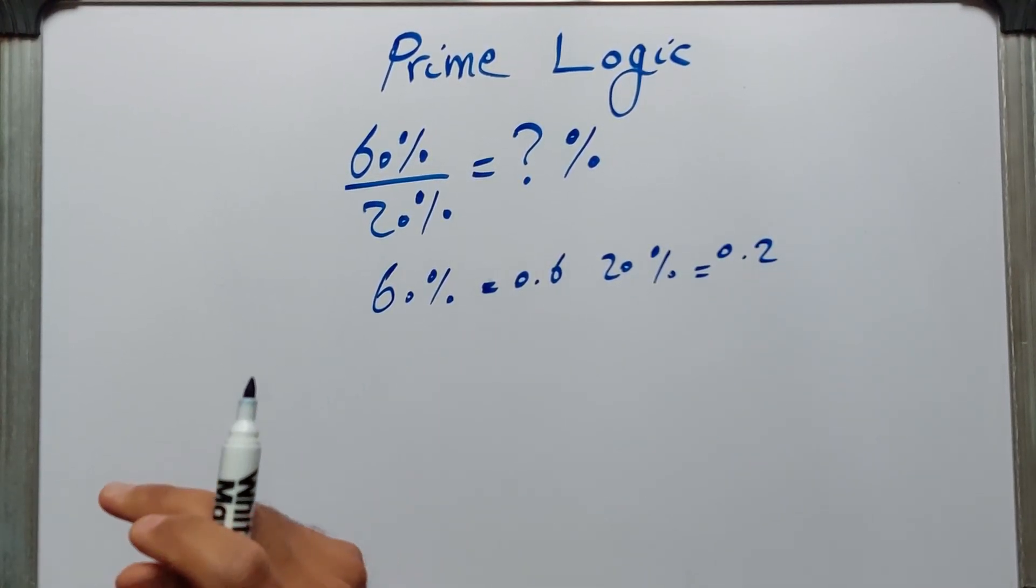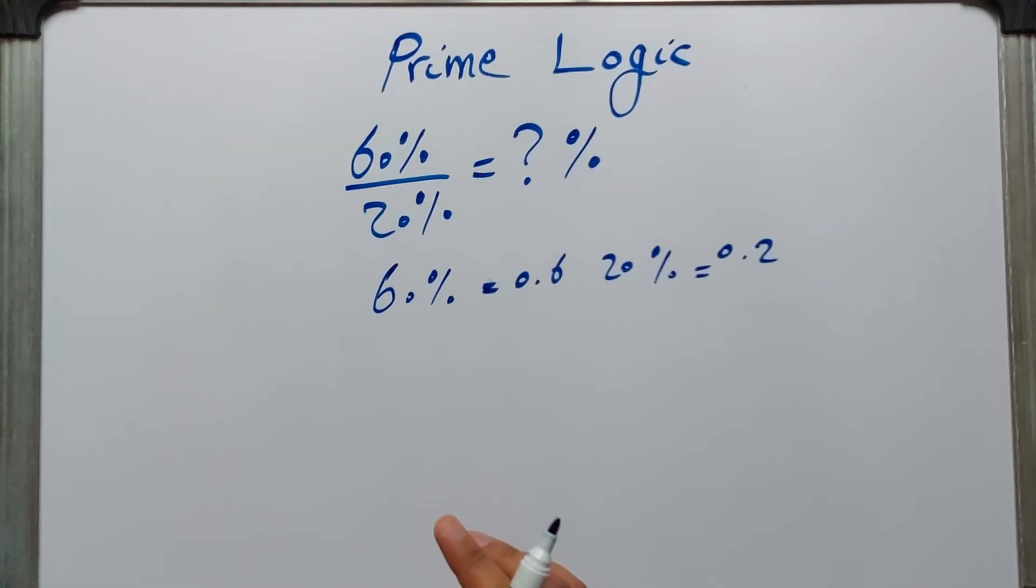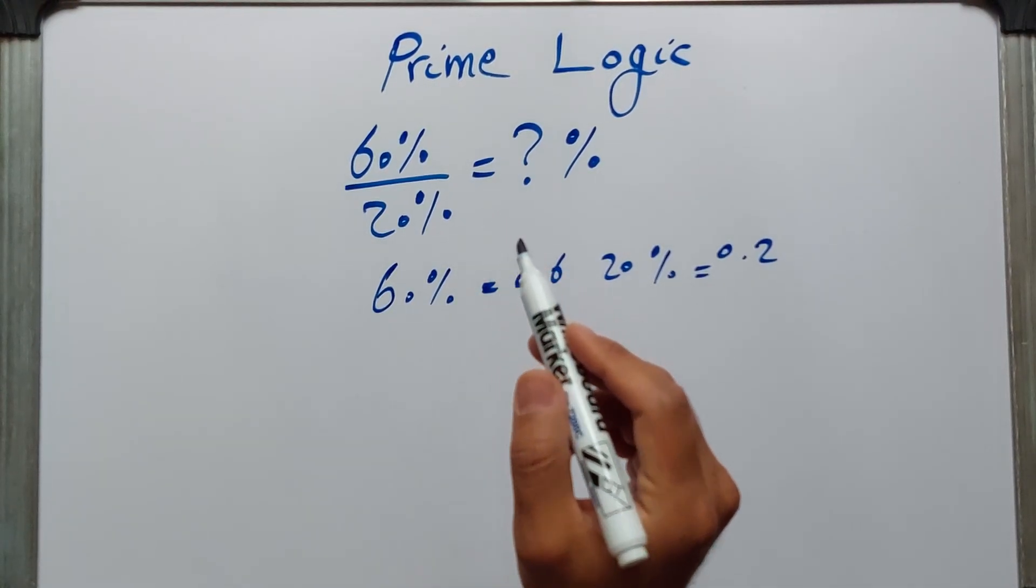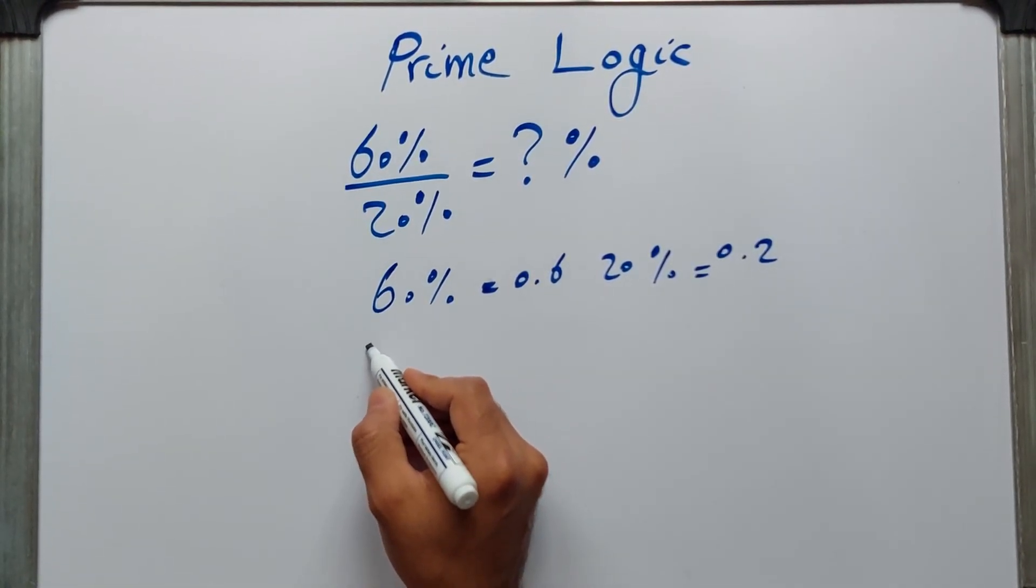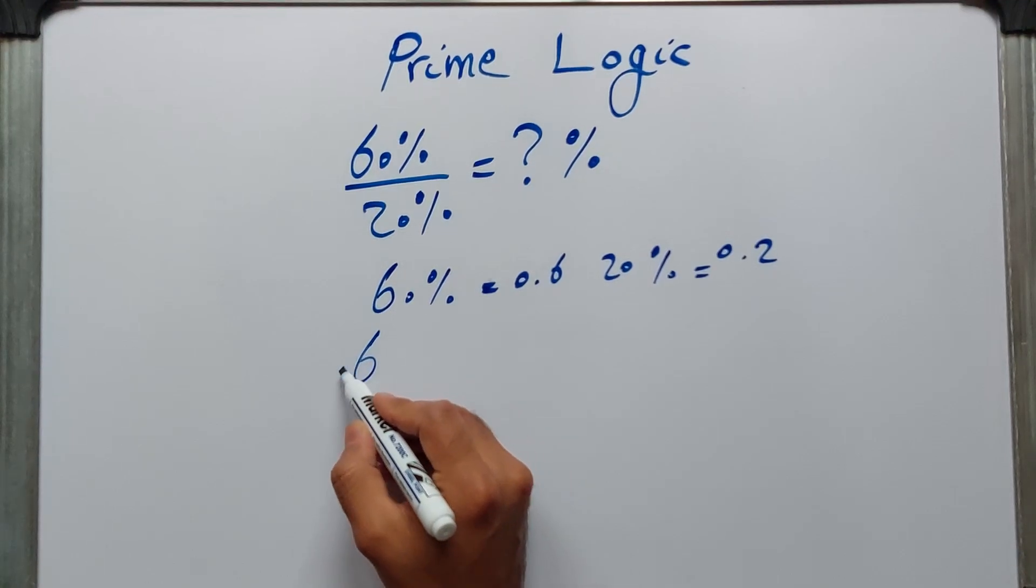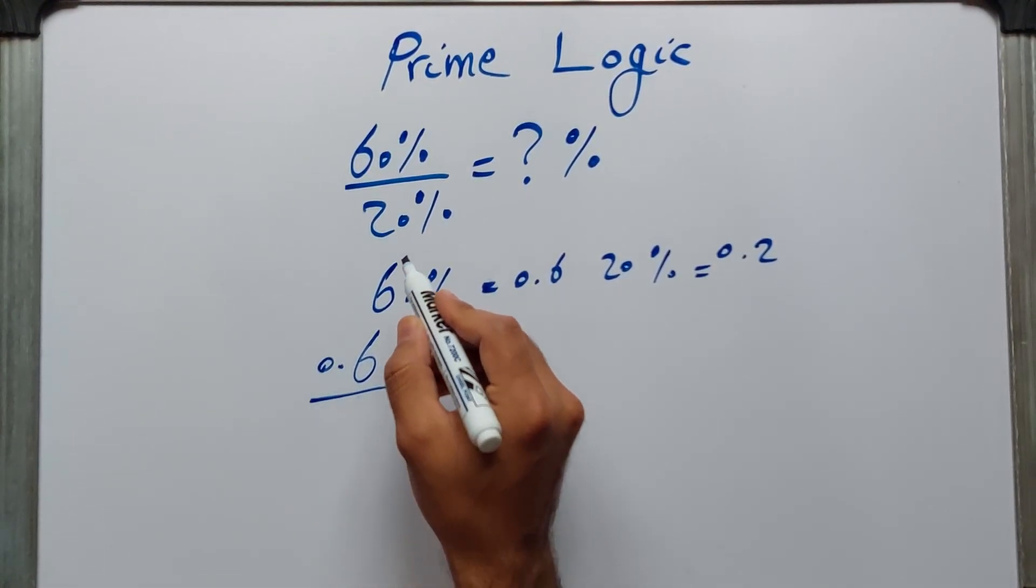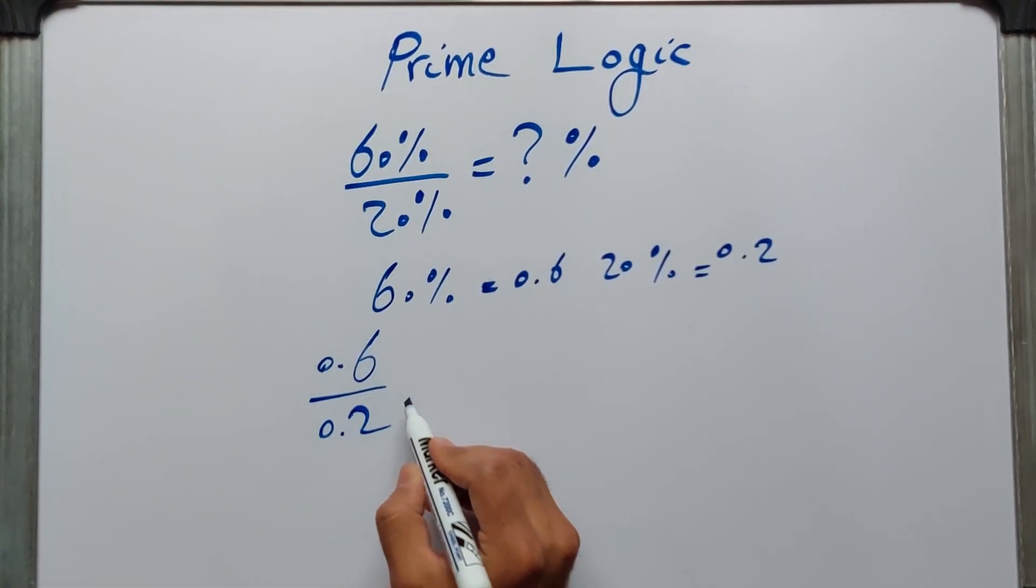So whenever there is a division or some operations on percentages, you should convert the percentage first to decimal. So 60%, as we talked earlier, is 0.6 over 20%, which is 0.2.